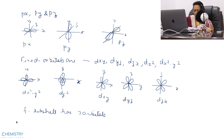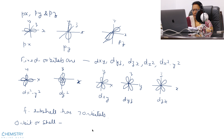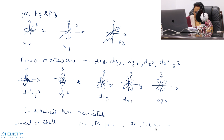Now, orbit or shell. Shells are spherical and are represented by K, L, M, N and so on, or 1, 2, 3, 4 and so on respectively. The energy of different orbits is different.